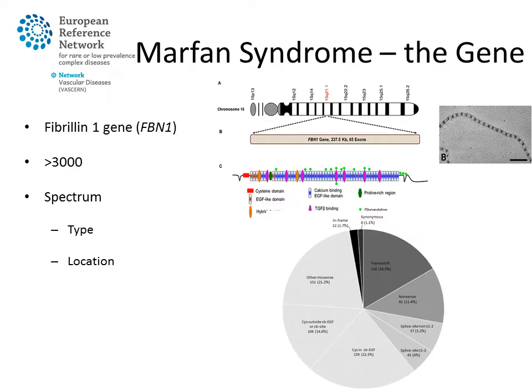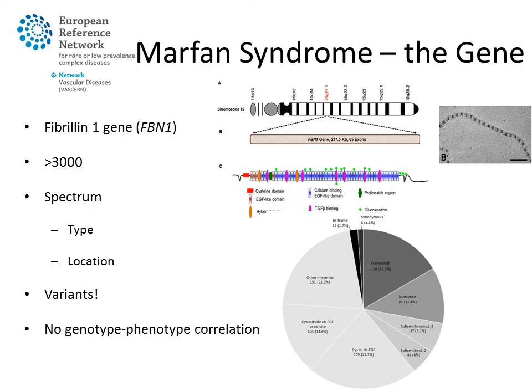Different types of mutation exist, the majority of which are so-called missense variants, leading to the alteration of one amino acid for another. Other types include nonsense variants, leading to the production of a shorter version of the protein. Interpretation of variants in the gene is not always easy, and in some cases results are not conclusive, which is also why genetic testing should not be considered as a diagnostic test in Marfan syndrome.